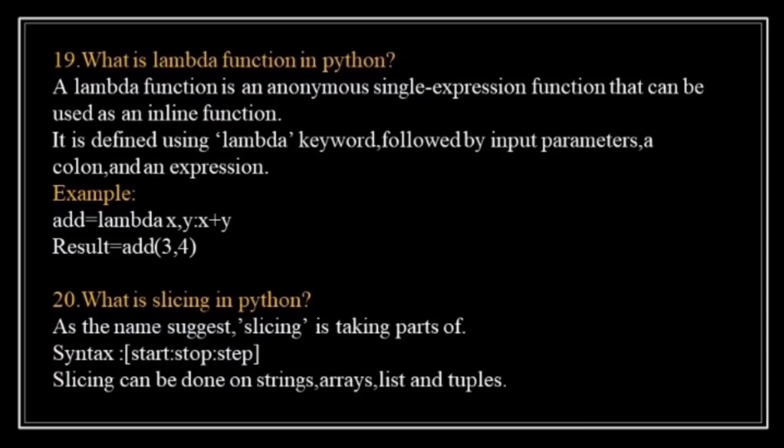What is slicing in Python? Python slicing is about obtaining a substring from a given string by slicing it from start to end. The syntax is: [start:stop:step], where start is the starting index, stop is the ending index or where to stop, and step is the number of steps to jump. Slicing can be done on strings, arrays, lists, and tuples.